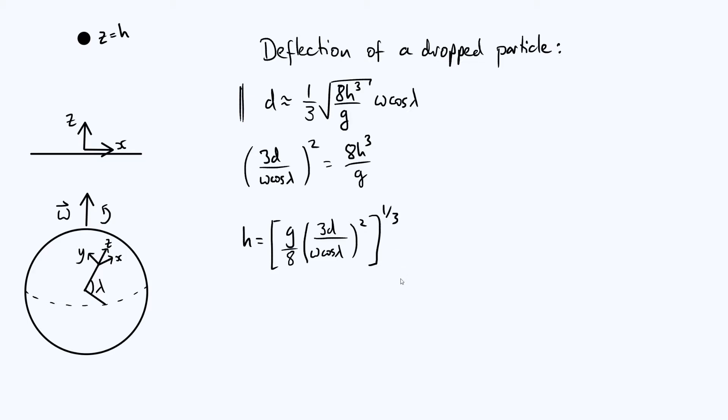So what numbers should we actually put into that expression? Well let's say you're aiming to get a deflection of 10 centimeters, which is pretty small. How high up would you have to go to get a deflection of 10 centimeters? So we need to know what omega is and what lambda is, so let's deal with omega first.